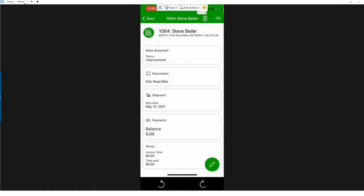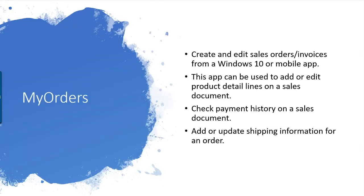Let's go back to desktop for a brief overview of My Orders. You can create and edit sales orders and invoices from your Windows 10 or mobile app. This app can add or edit product detail lines on the sales document, check payment history, record payment transactions, and add or update shipping information on your order.